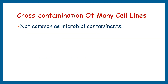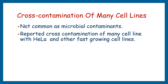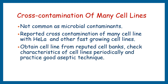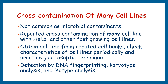While not as common as microbial contamination, extensive cross-contamination of many cell lines with HeLa and other fast-growing cell lines is a clearly established problem with serious consequences. Practices that will help you avoid cross-contamination include obtaining cell lines from reputable cell banks, keeping an eye on the characteristics of cell lines periodically, and practicing good aseptic technique. You can confirm the presence or absence of gross contamination of cell lines by using DNA fingerprinting, karyotype analysis, and isotype analysis.